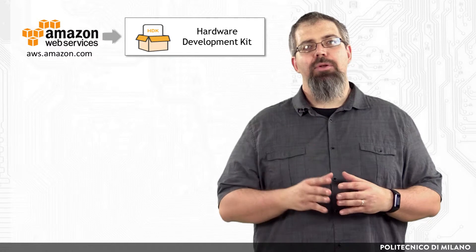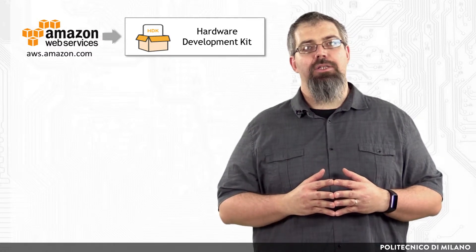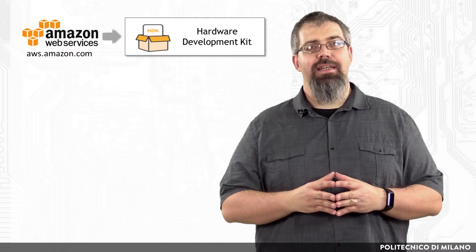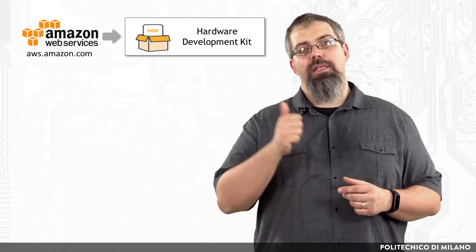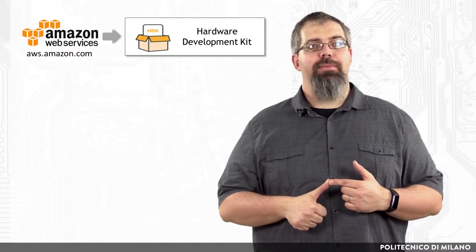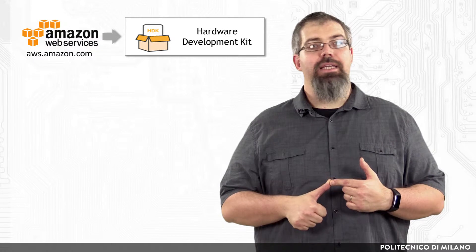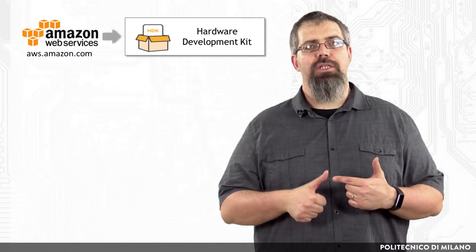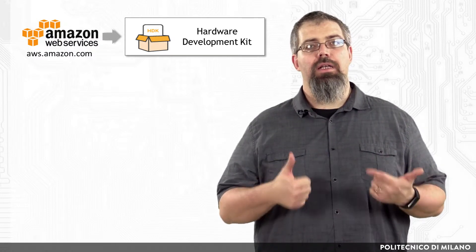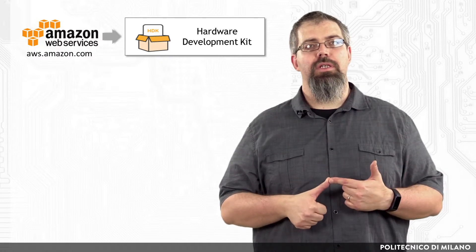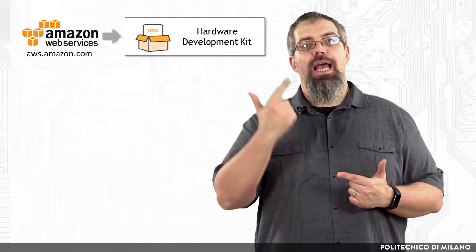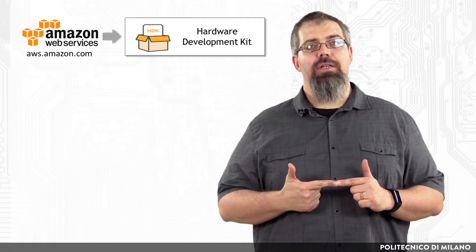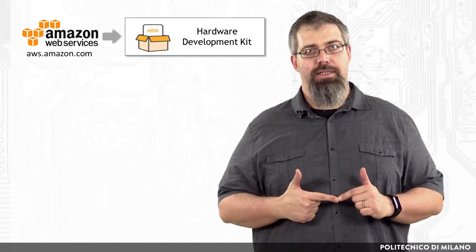The AWS EC2 FPGA hardware and software development kits, as the names suggest, include two parts: the development workflows for developing the Amazon FPGA image with the hardware development kit or the GUI workflow, which allows developers to work in GUI mode using Vivado IP integrator, and the software development kit for using AFIs on FPGA-enabled EC2 instances.